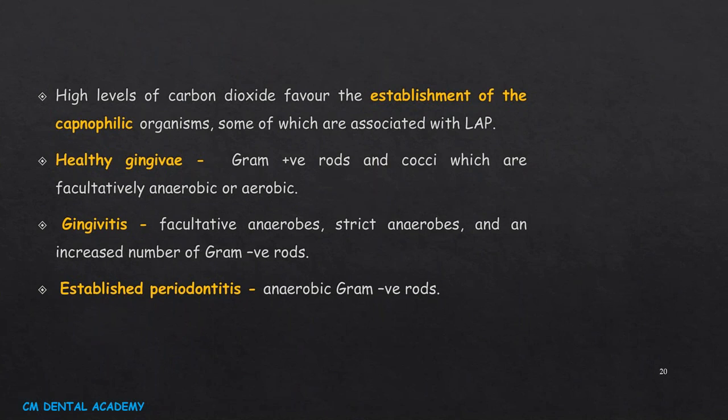High levels of carbon dioxide favor establishment of capnophilic organisms, which are associated with localized aggressive periodontitis. Healthy gingiva contains gram-positive rods and cocci that are facultatively anaerobic or aerobic. Gingivitis has facultative anaerobes, strict anaerobes, and an increased number of gram-negative rods. Established periodontitis usually has anaerobic gram-negative rods.